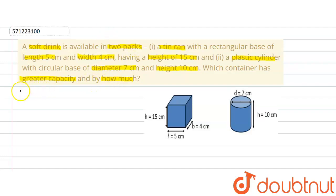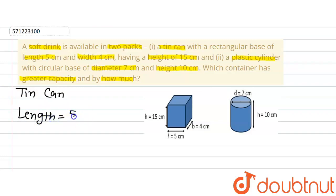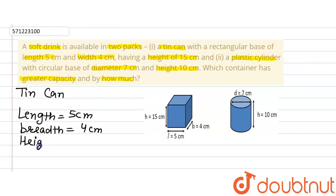First of all, we will consider the tin can, that is the cuboidal shaped pack. Let's write down what has been given in the question. We are given the length, breadth and height. Length is given as 5cm, breadth is given as 4cm, and height is given as 15cm.